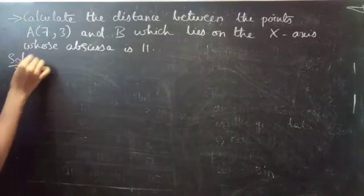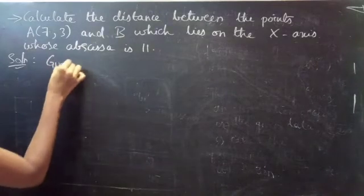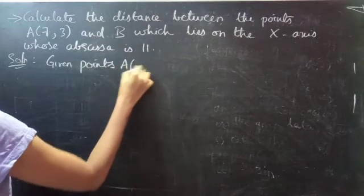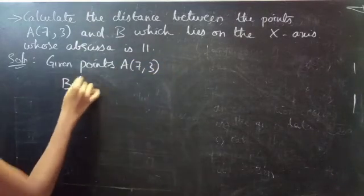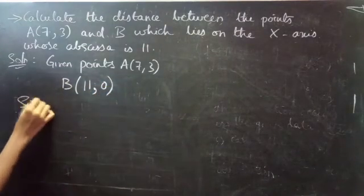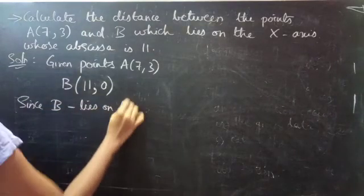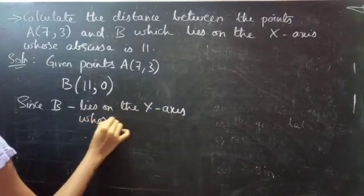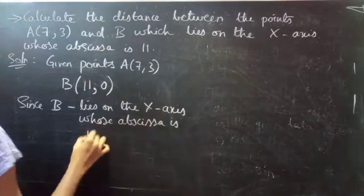Solution. We are given two points A and B. Given points A(7, 3) and B(11, 0). Since B lies on the x-axis, whose abscissa is 11.